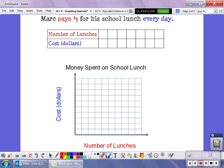This works even if your ratio table goes horizontally. So here's this situation. We know that Mark pays three dollars for his school lunch every day. So if Mark buys one lunch, he's going to pay three dollars.